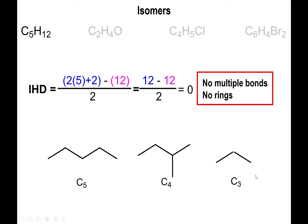Once you've gone through all possibilities for a four-carbon chain, move down to a three-carbon chain. Here you're running out of options — placing the two extra carbons on the ends brings you back to the four-carbon chain or the five-carbon linear chain. The only choice is to place both extra carbons on the middle carbon, giving you five carbons total. You've now run out of room, so you can't go to a two-carbon chain.